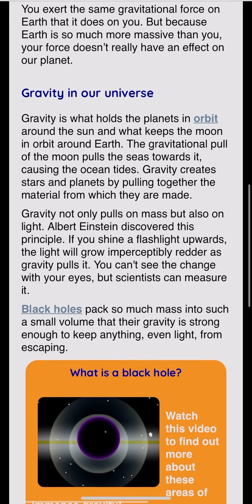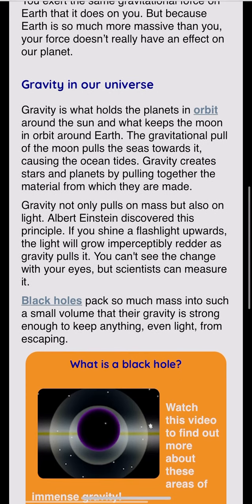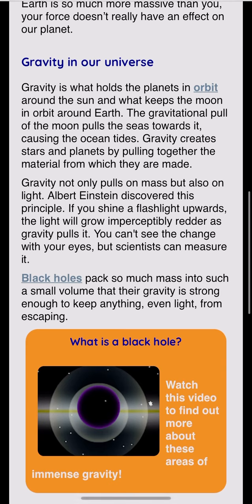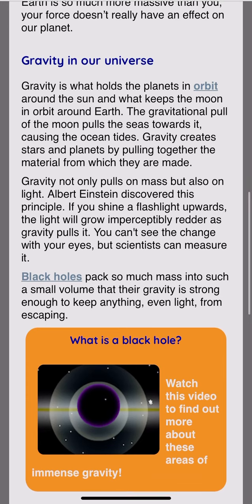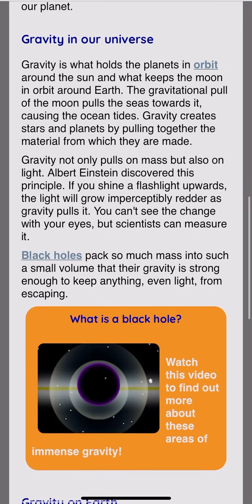Gravity not only pulls on mass but also on light. Albert Einstein discovered this principle. If you shine a light upwards, the light will grow imperceptibly redder as gravity pulls it. You can't see the change with your eyes, but scientists can measure it.